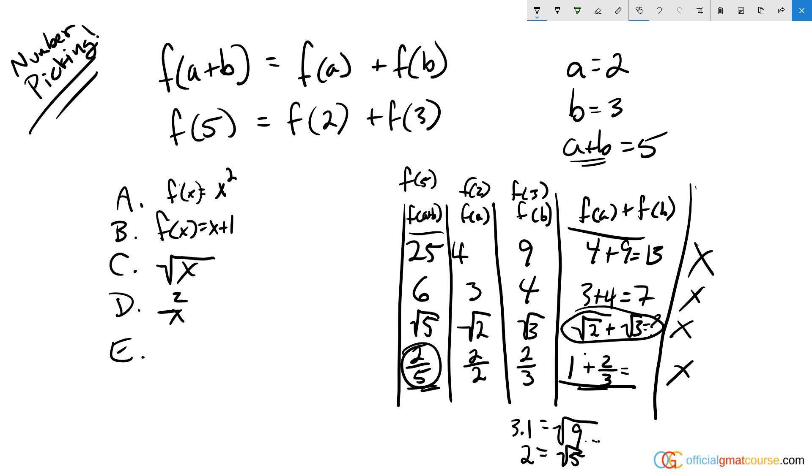Let's look at the math in E. We have f of x equals negative three x, which means negative three times five equals negative three times two plus negative three times three. Is this true? Well, negative 15 equals negative six minus nine. That is true.